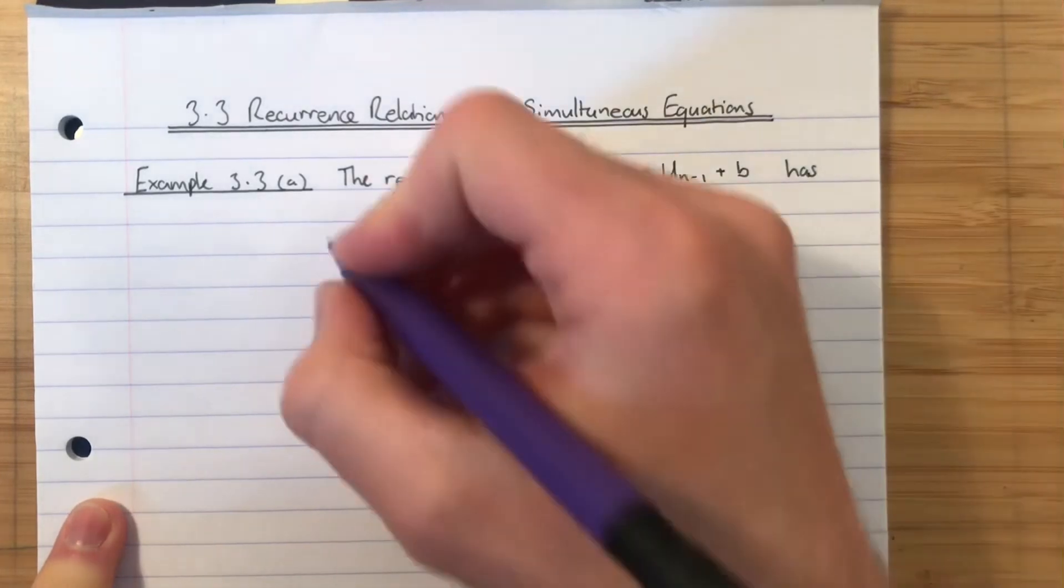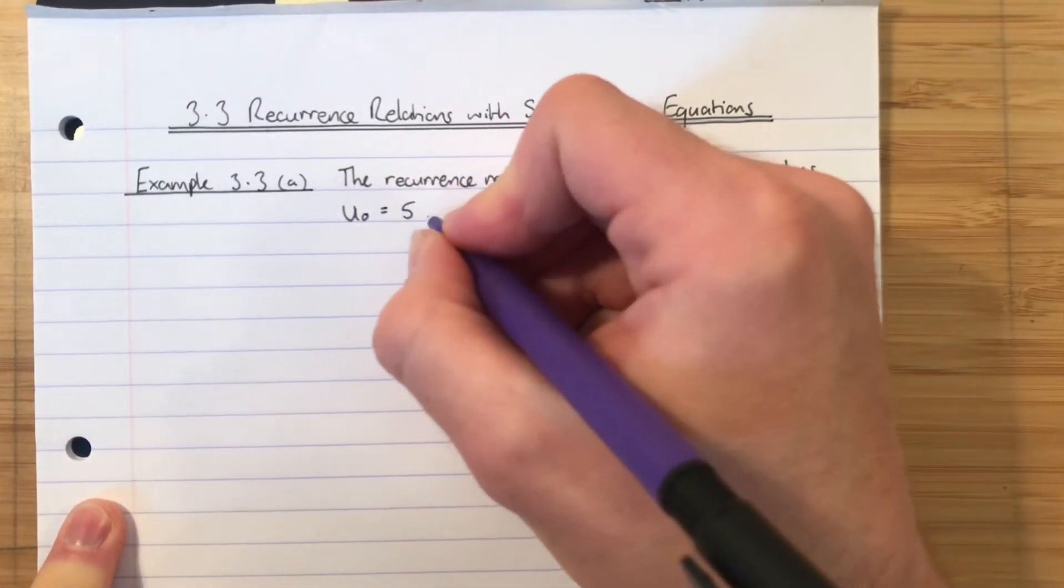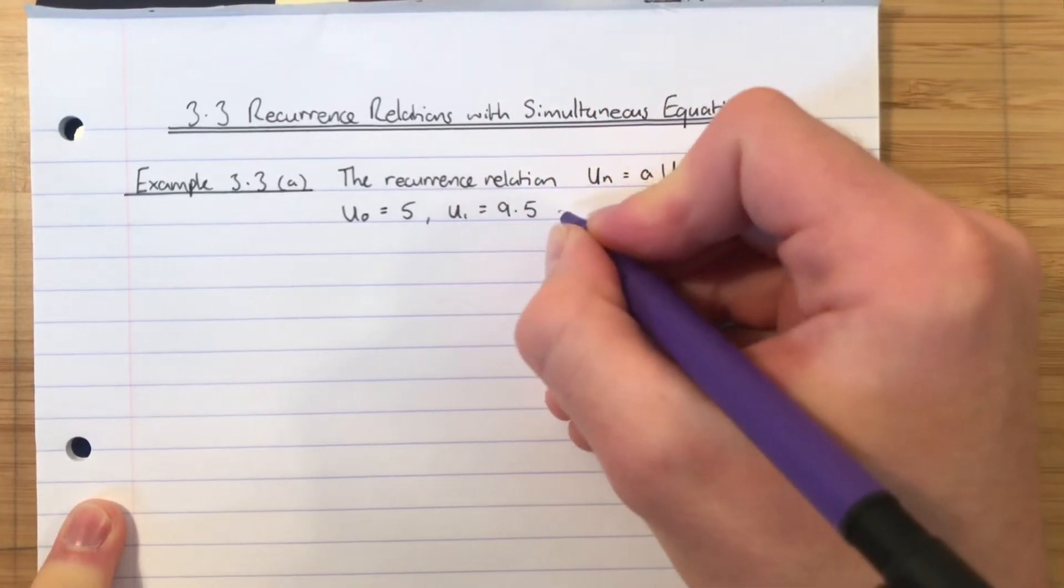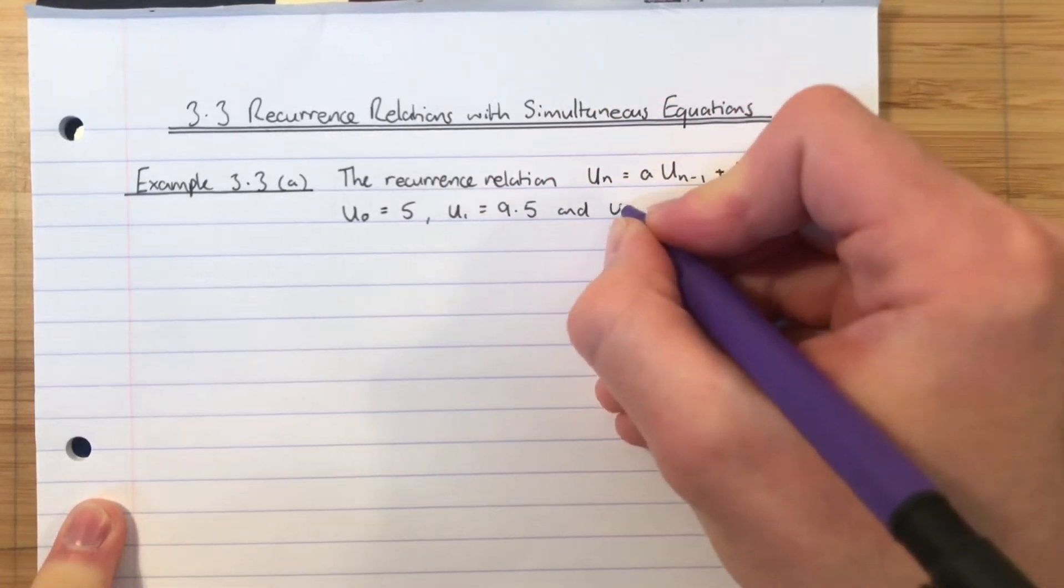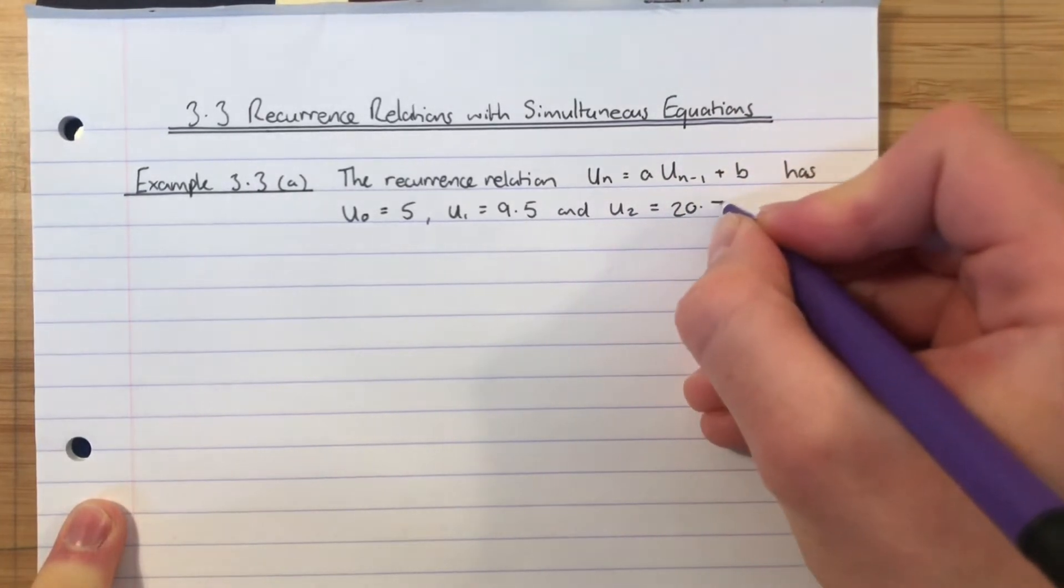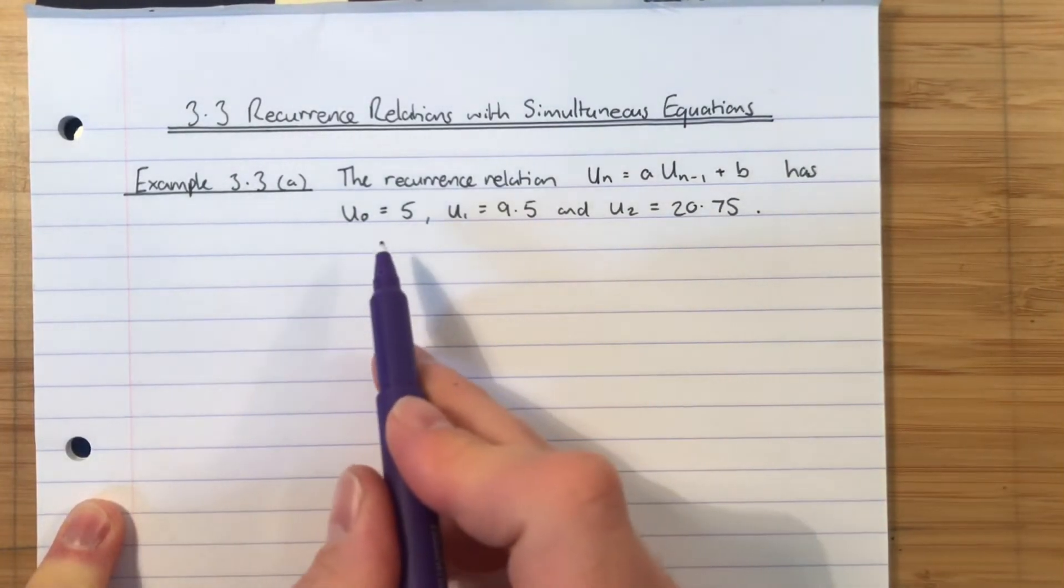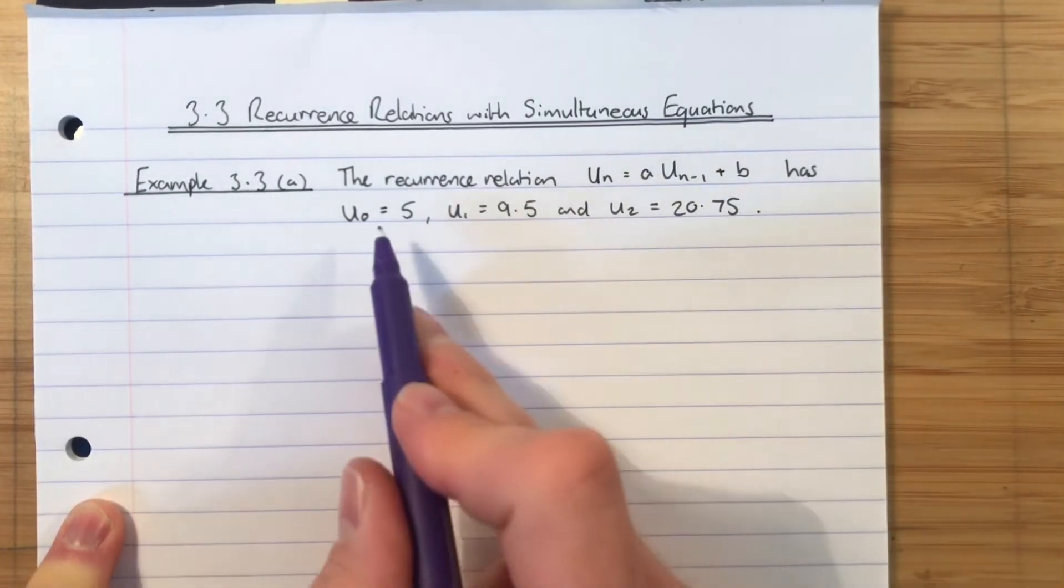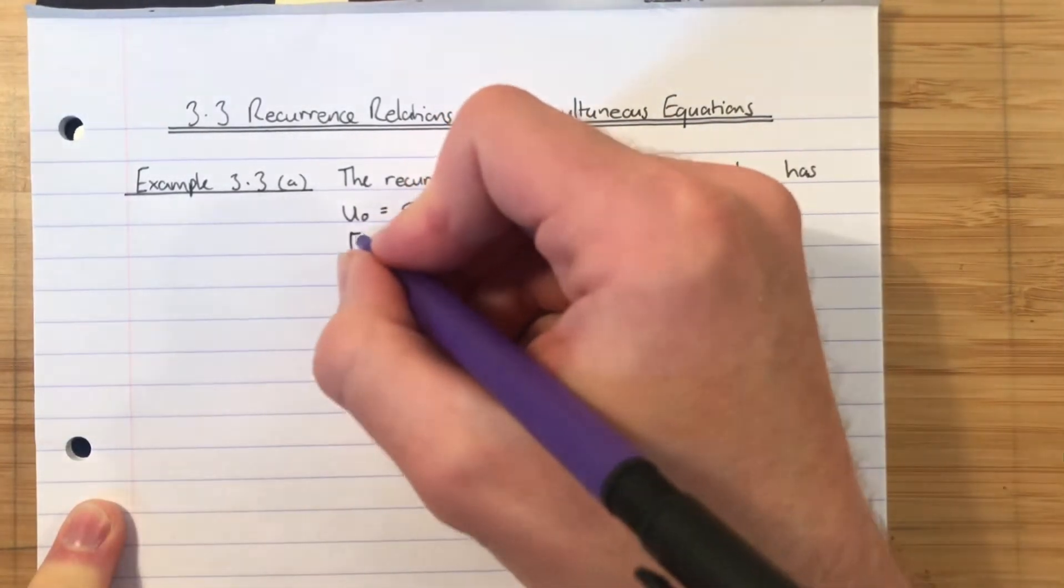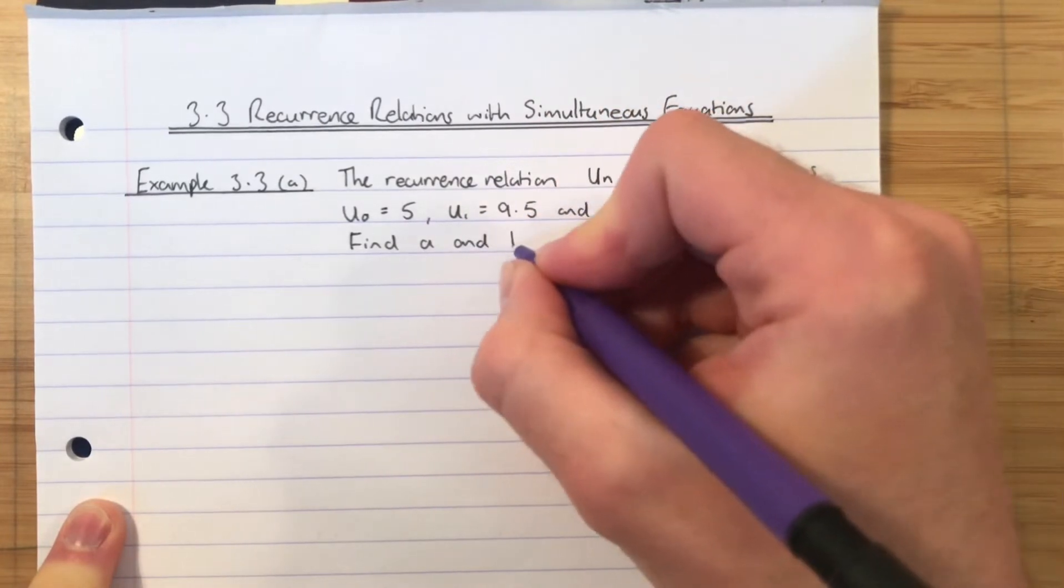Has U_0 equal to 5, U_1 equal to 9.5 and U_2 equal to 20.75. So that's the situation I said you would see three consecutive terms and when you see that it's simultaneous equations. So the question is going to say find A and B.